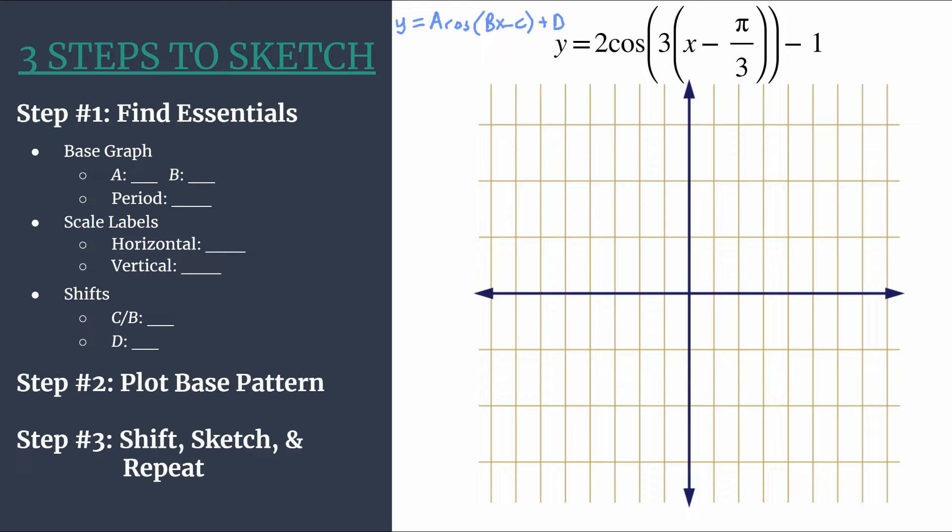Looking, we see that a is going to be 2. So our amplitude is 2. Our graph is vertically stretched from the parent function cosine x by a factor of 2.